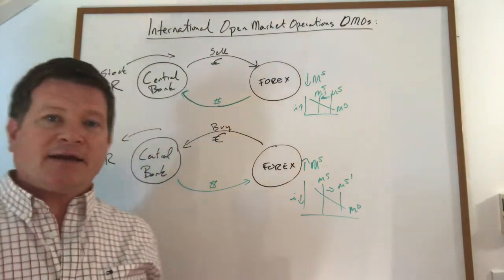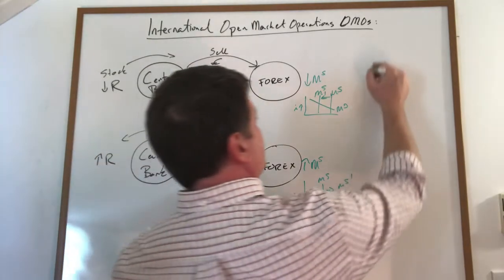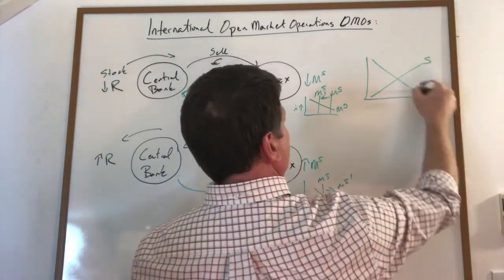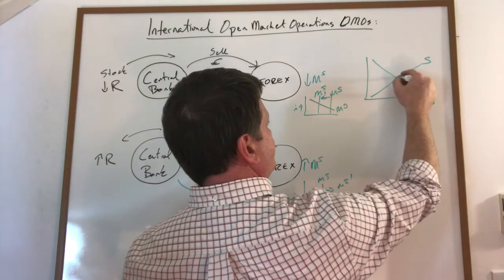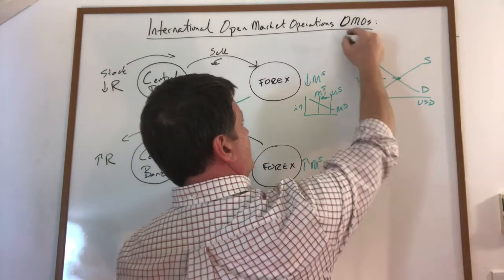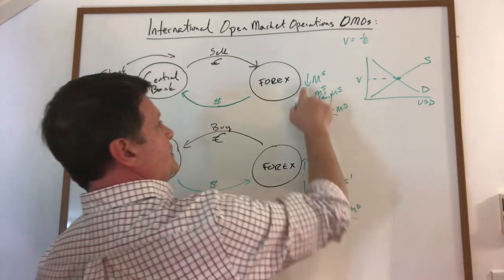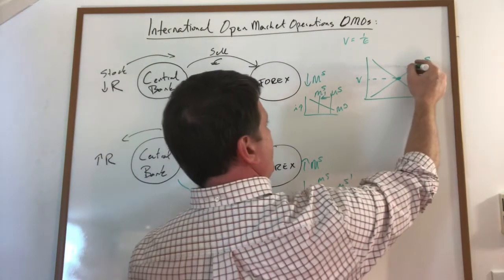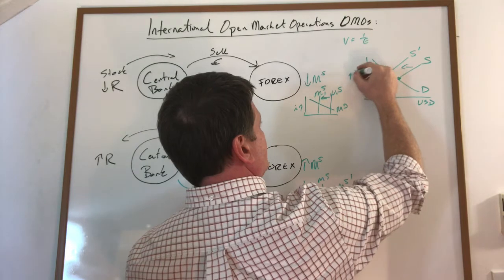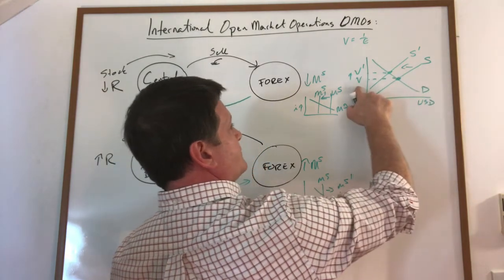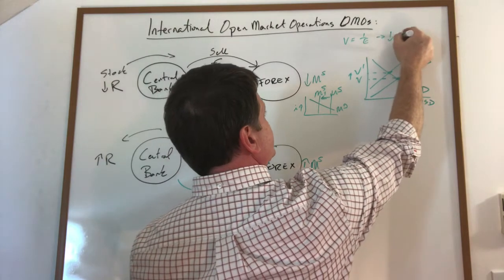Other effects that this had, in the global market, we call this the value of the domestic currency, and it's one over the exchange rate. This lowered the supply of our dollars in the market and raised the value of our currency, which decreases the exchange rate.